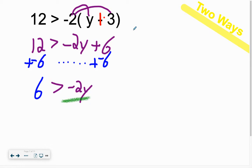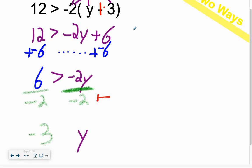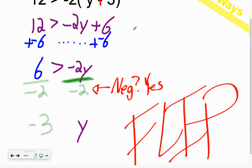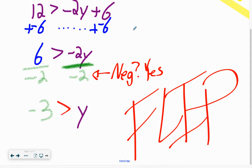That comes out to be positive 6 greater than negative 2Y. We're going to divide by negative 2 because the negative 2 is touching. Doing the math: negative 3, leave a space, and Y. Now ask that question. Negative. If you multiply by a negative, when you say yes, you need to flip the sign. So instead of greater than, flip it, now it's less than.